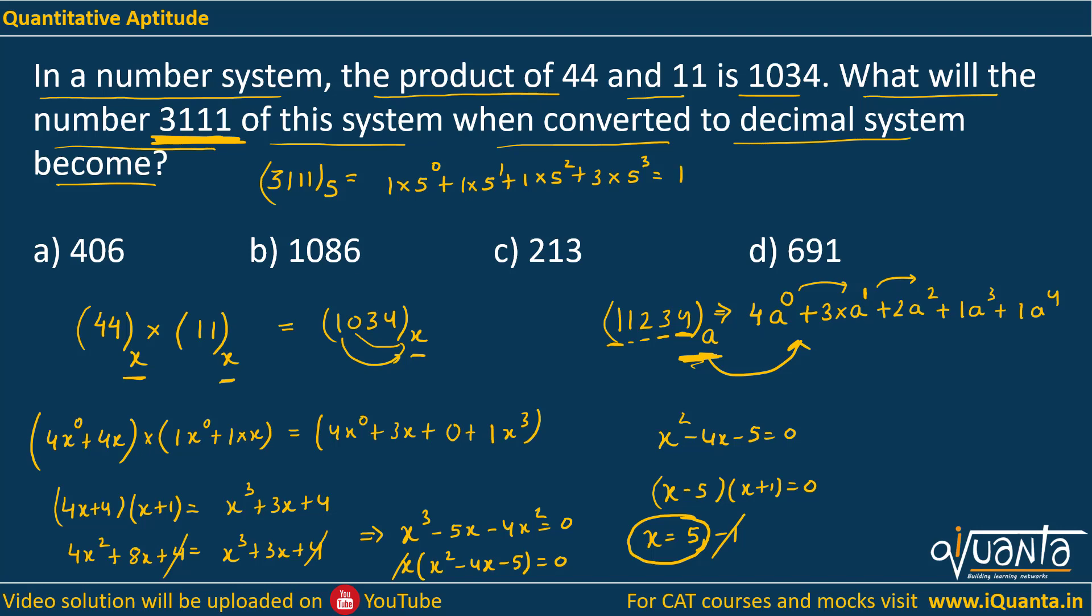This would give me 1 plus 5 plus 25 plus 3 into 125, which is 3 into 125. If you add them all you'll be getting 406 as the final answer. So option A is correct.